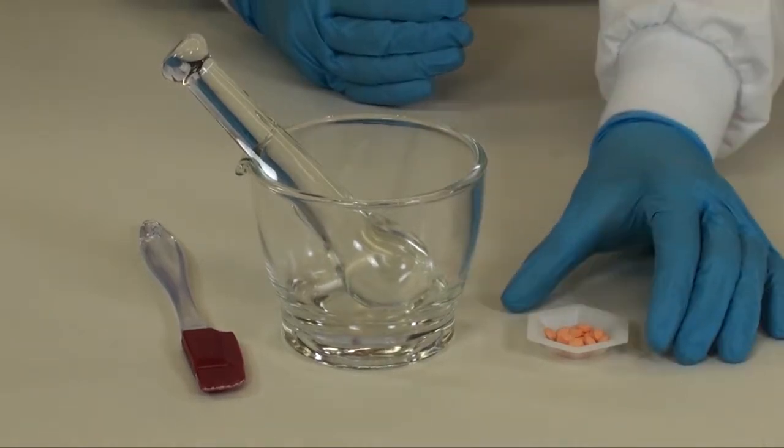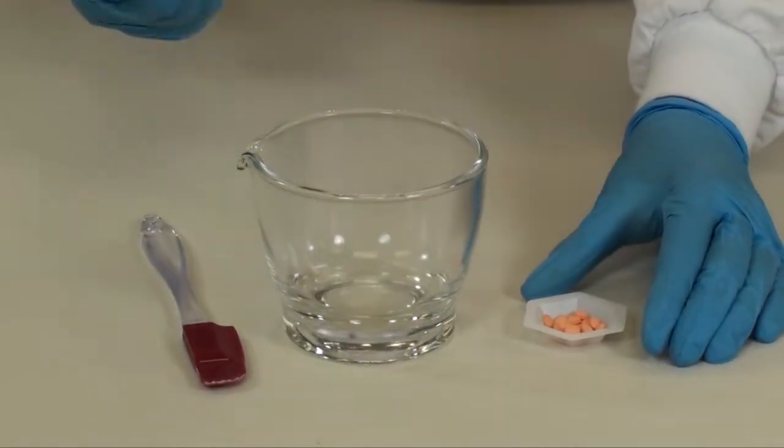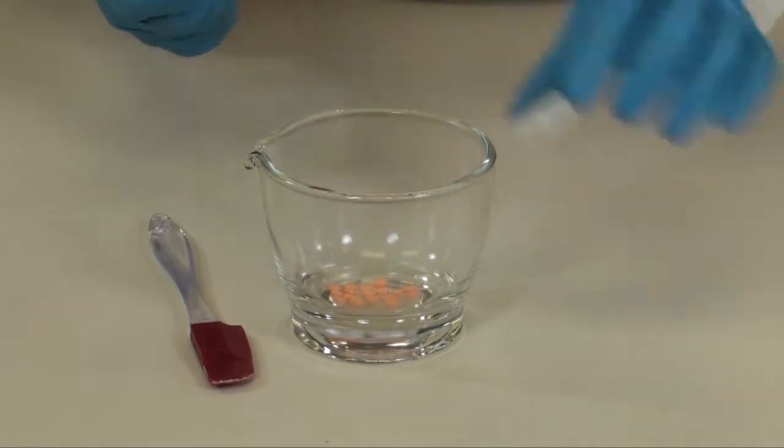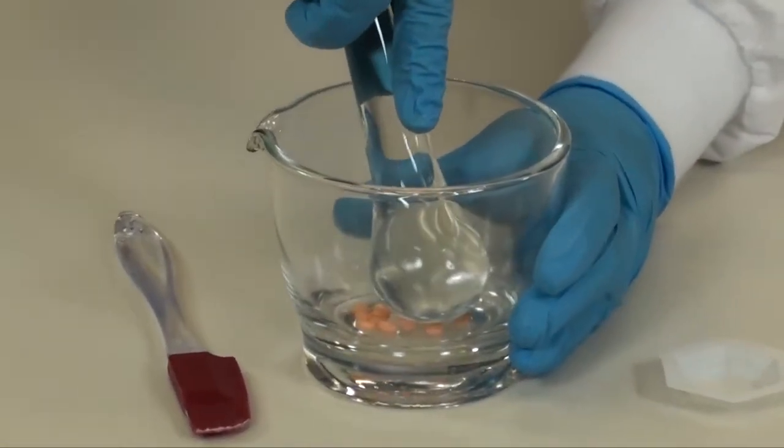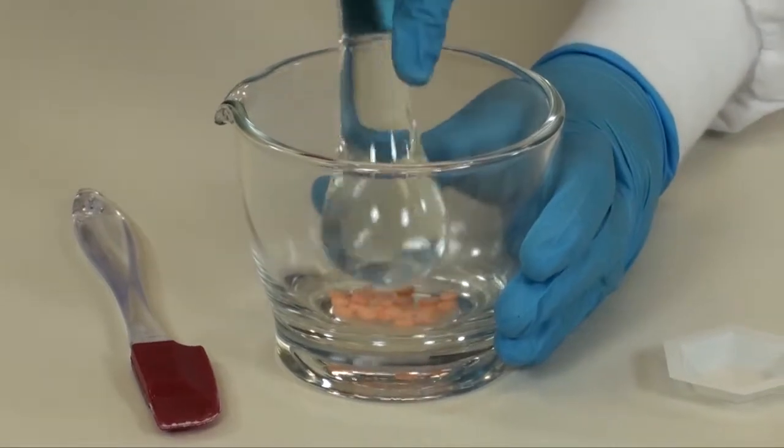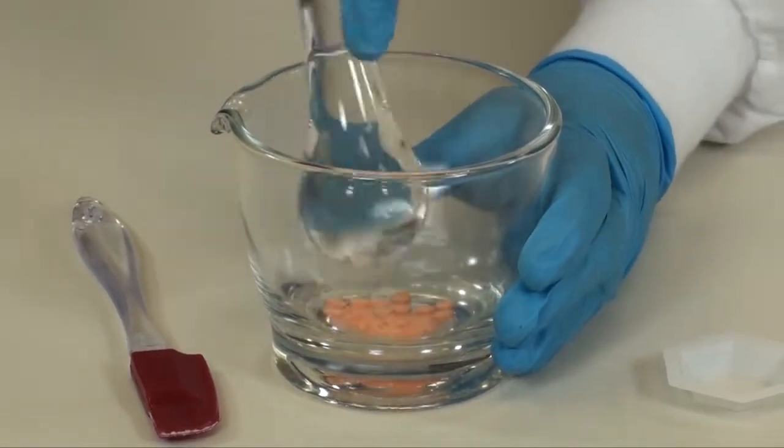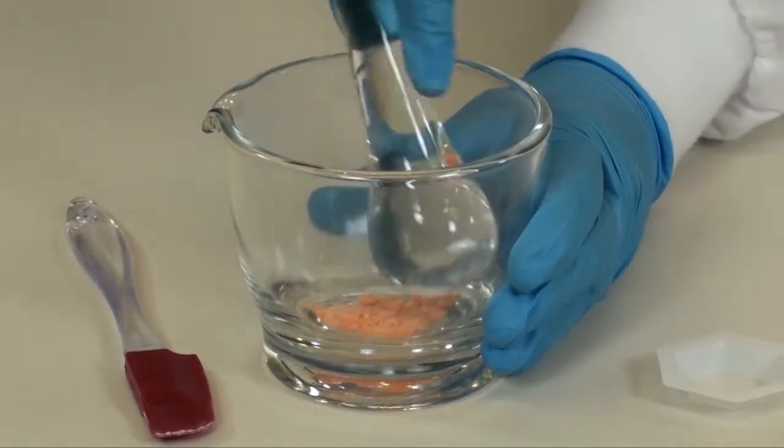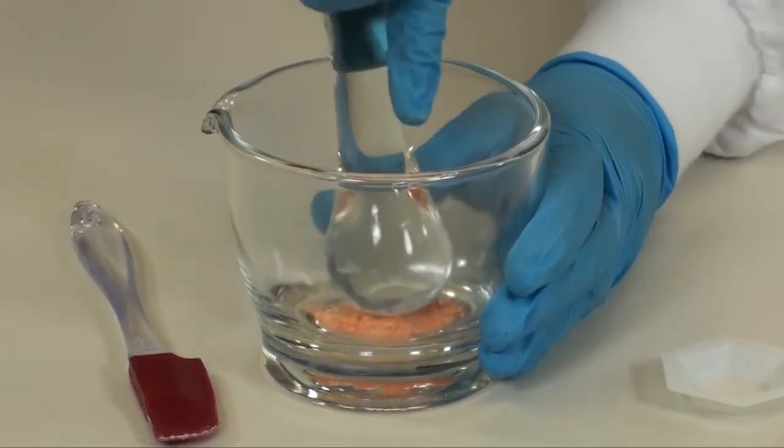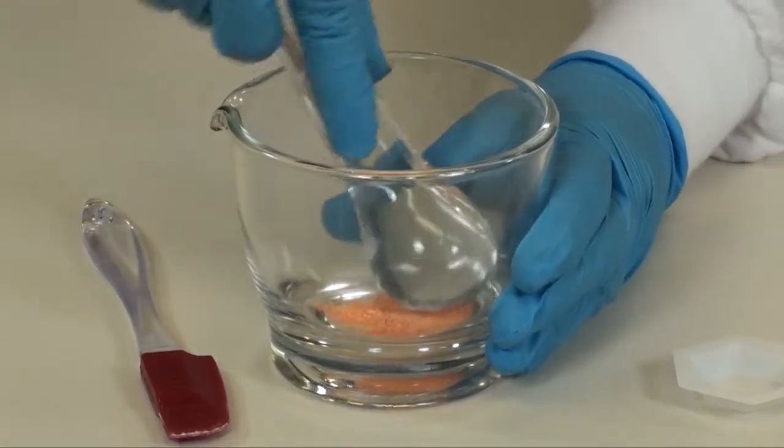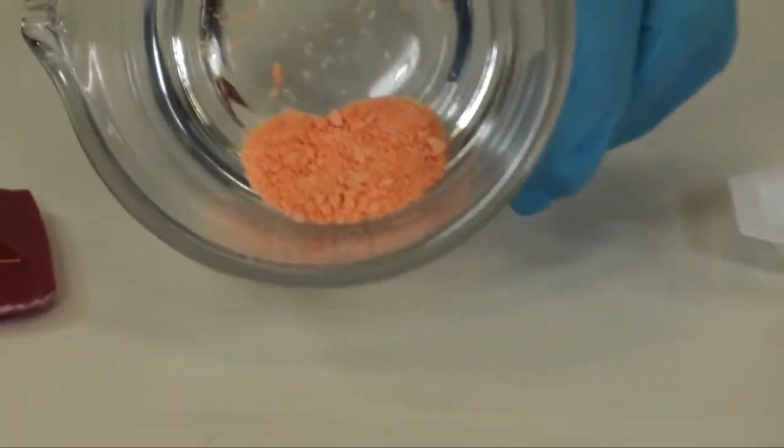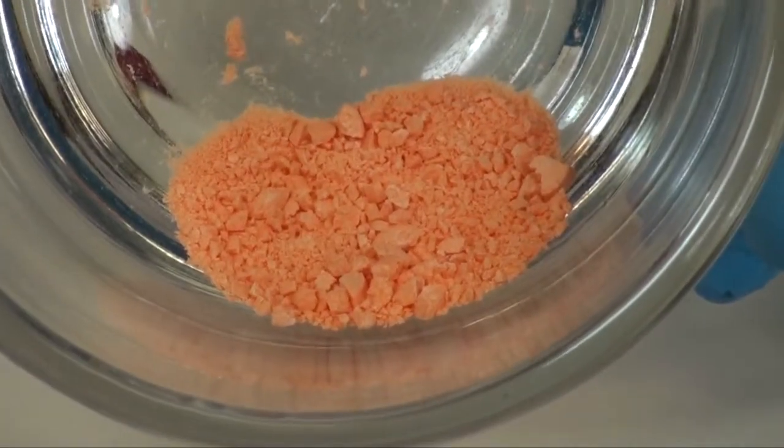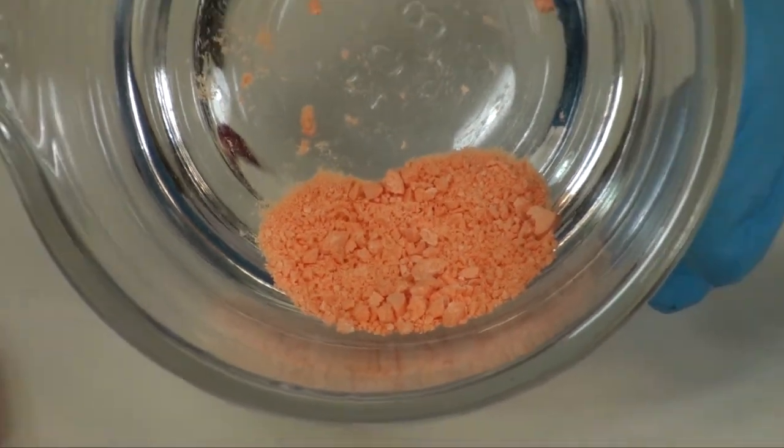Place the required number of propranolol tablets into your glass mortar. You are going to triturate to a fine powder. Initially, it's going to take a downward turning motion to start to break up the tablets. Don't stop here.